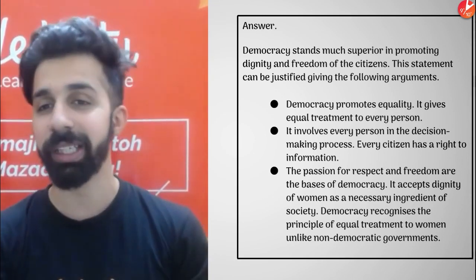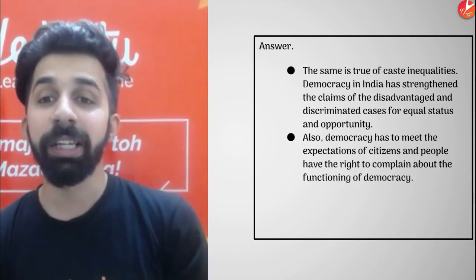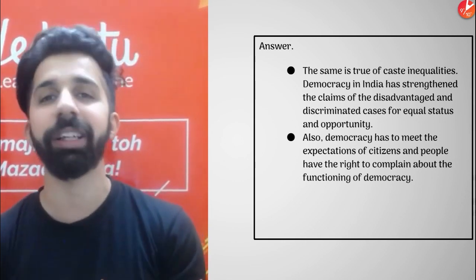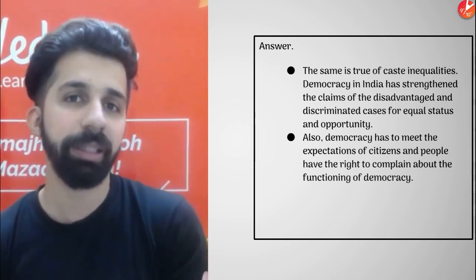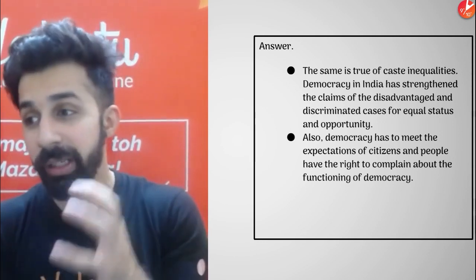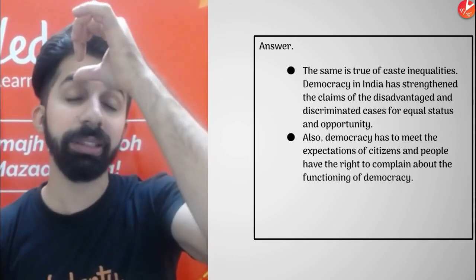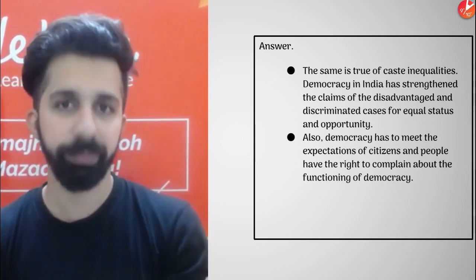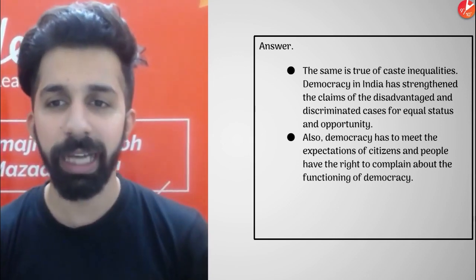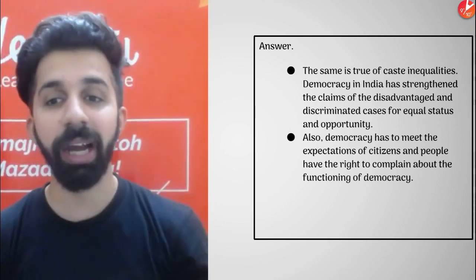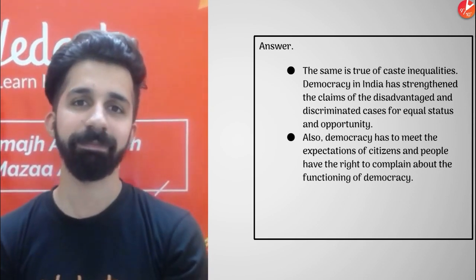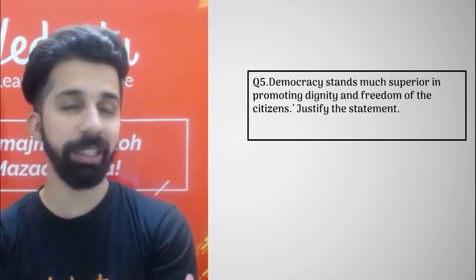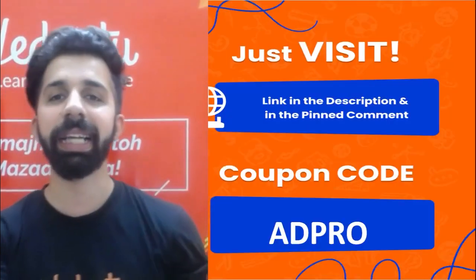Being in India, we are a democratic government and we give equal treatment to women. The same is true for caste inequalities — we also try to uplift the condition of all those people who come under the category of disadvantaged or discriminated classes like SC or ST, who were once treated unequally. There are laws which protect the dignity of people from these categories so their community can be uplifted. Also, democracy has to meet the expectations of citizens, and people have the right to complain about the functioning of democracy. These are features of democracy which stand superior in promoting dignity and freedom of citizens, unlike any other form of government.